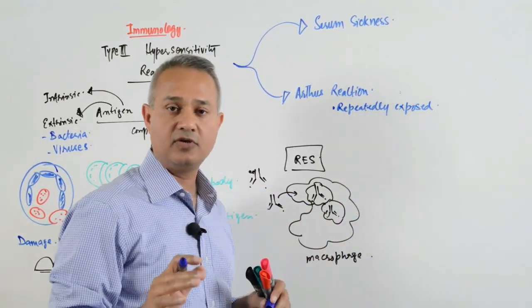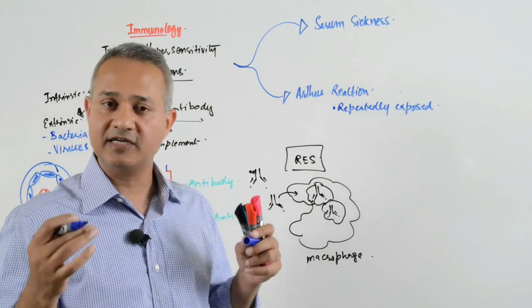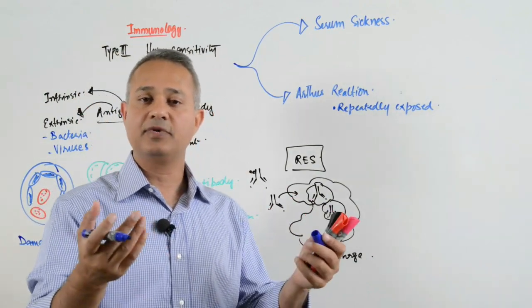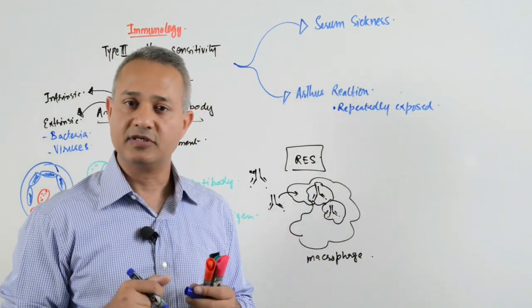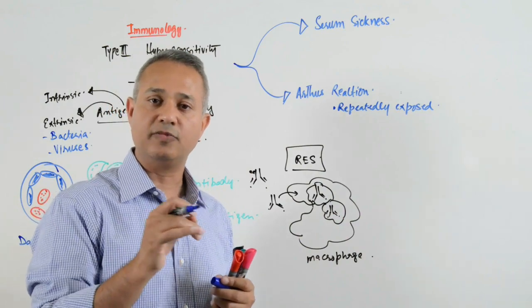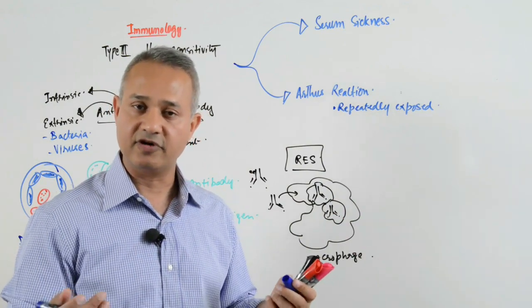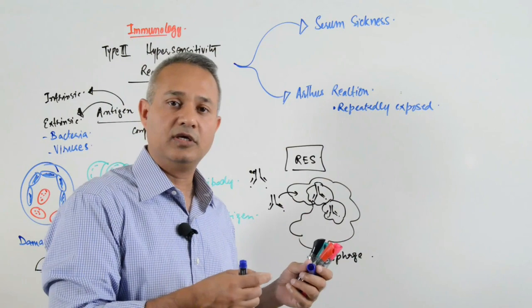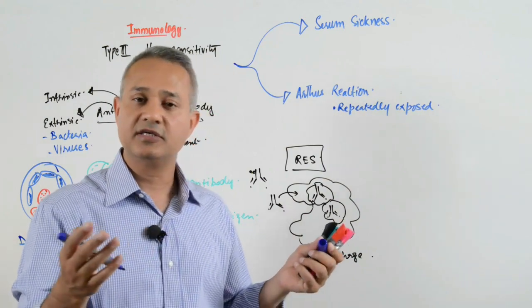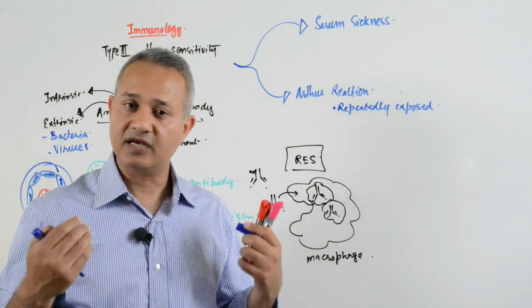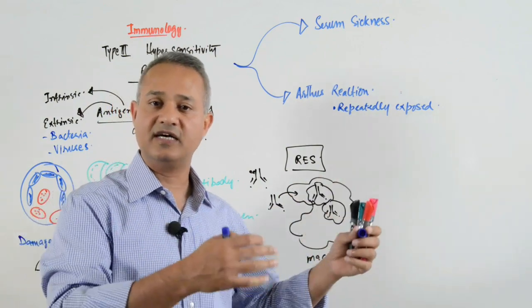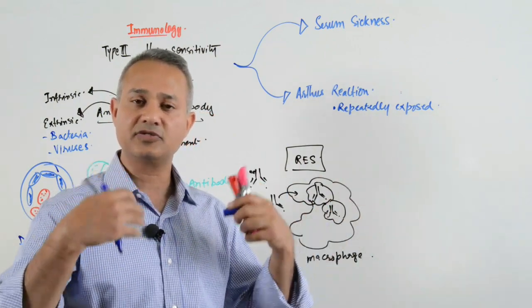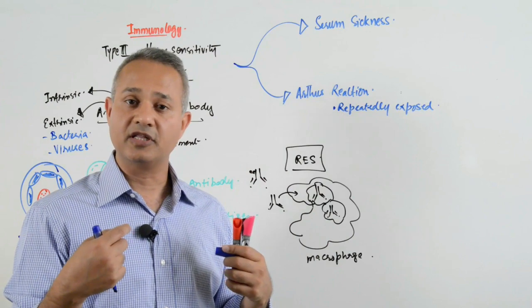Exposed to an antigen. What could be that person who is repeatedly exposed to some antigen? For example, farmers exposed to actinomycetes, that is the hay fever or the cheese workers, their lung or some other such antigens that are just continuously incorporated in the body.